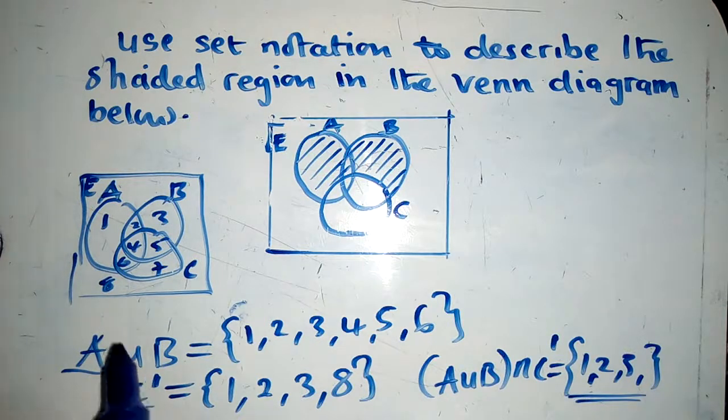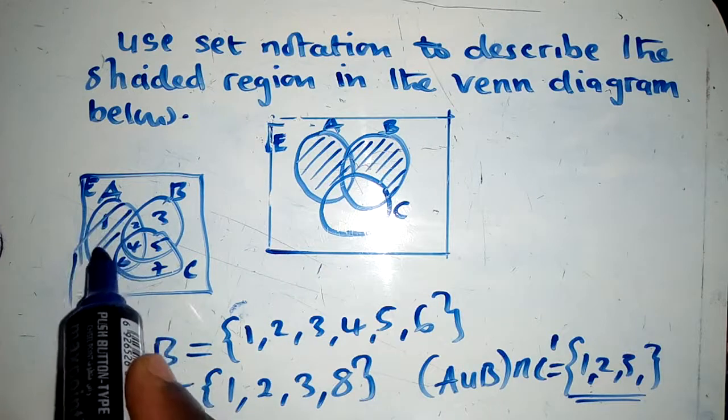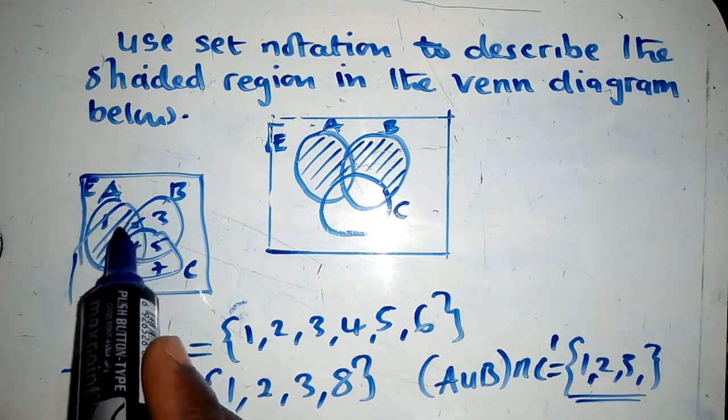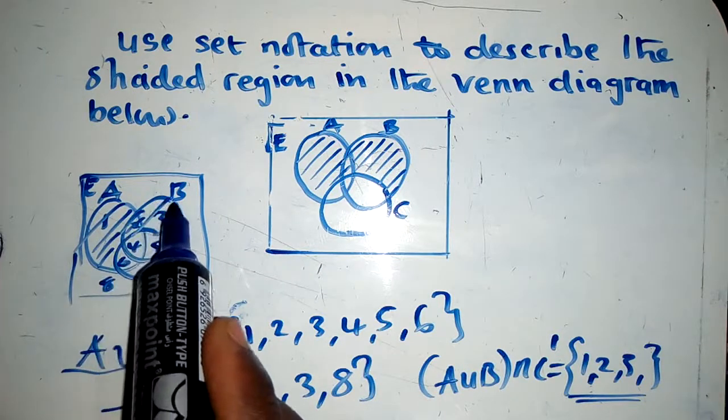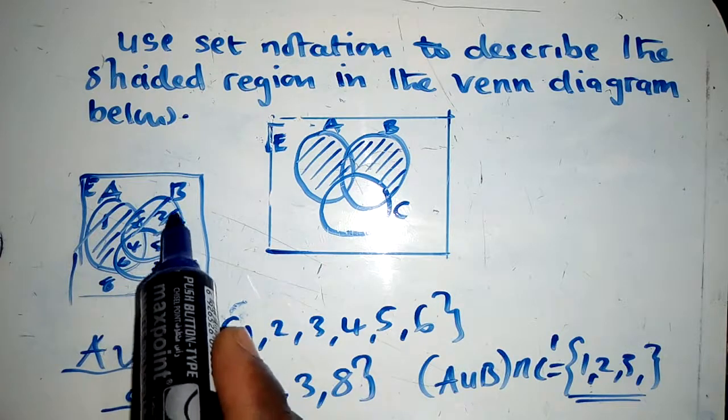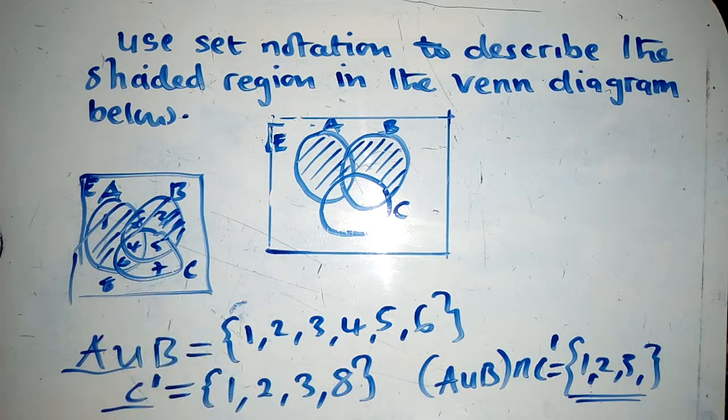Okay. So where is 1? 1 is over here. We shade where 1 is. 2 is here. We shade where 2 is. 3 is over here. We shade where 3 is. So this is how you find.